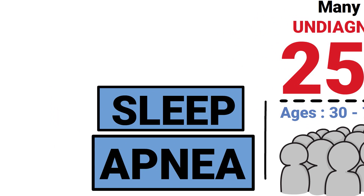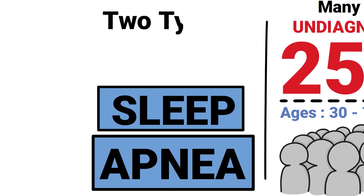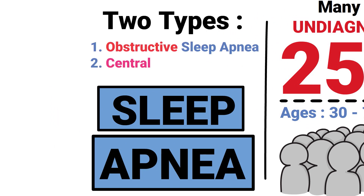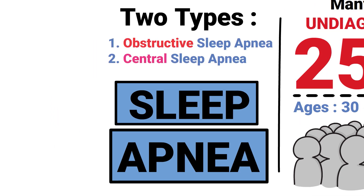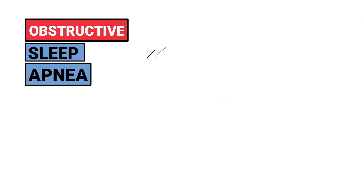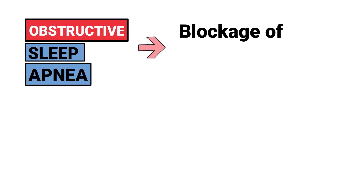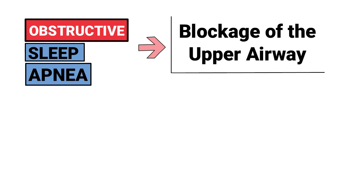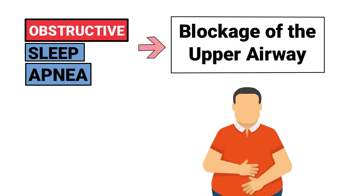There are two types of sleep apnea: obstructive and central. Obstructive sleep apnea is the most common type, which occurs due to a blockage of the upper airway and is often related to obesity.